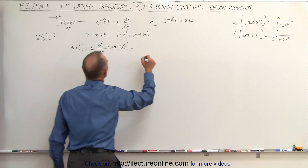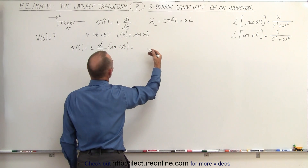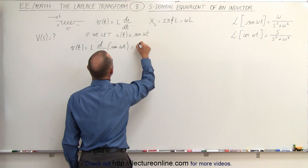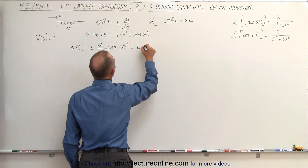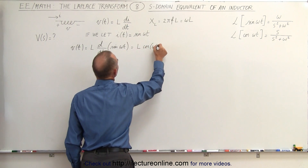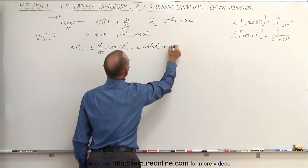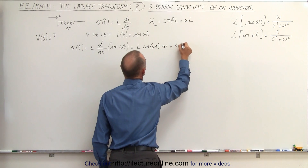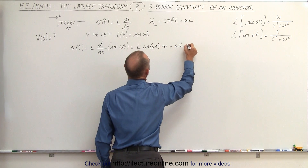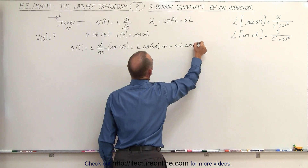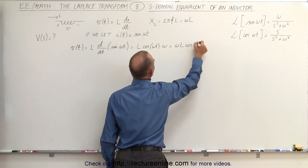So V(t) would be equal to L times the derivative with respect to time of sin(ωt). The derivative of sin(ωt) is L times cos(ωt) times the derivative of the angle, which is equal to ωL times cos(ωt).